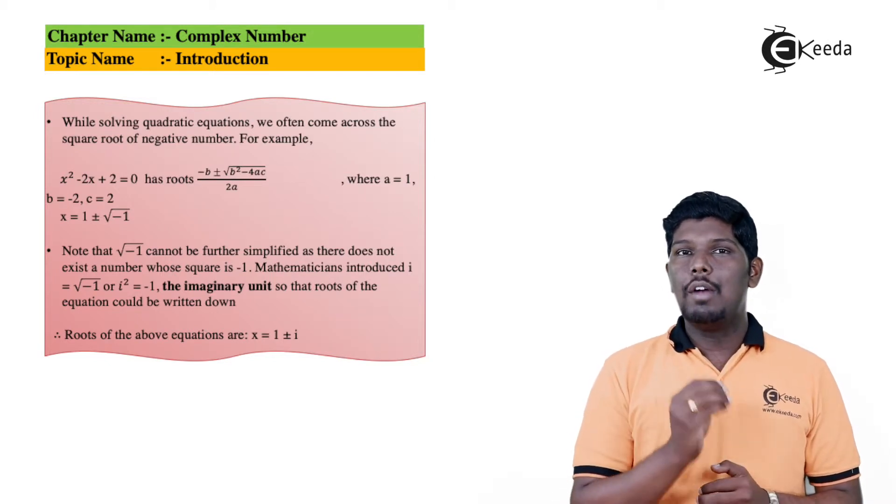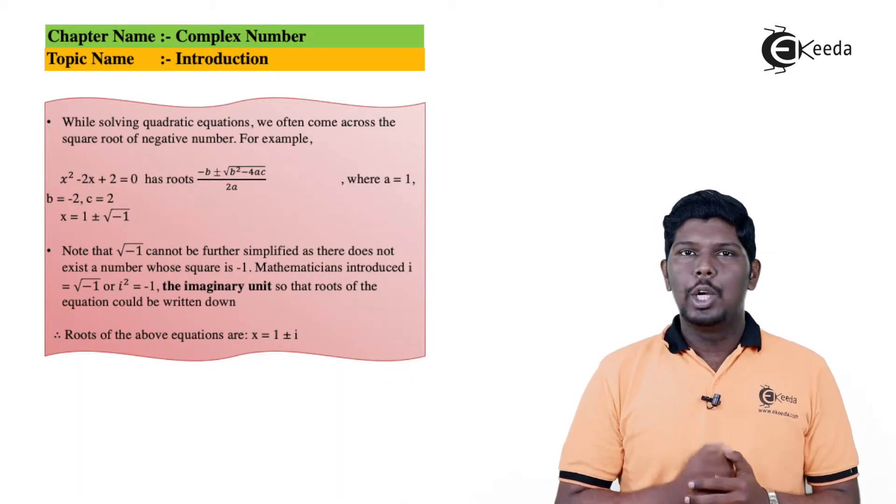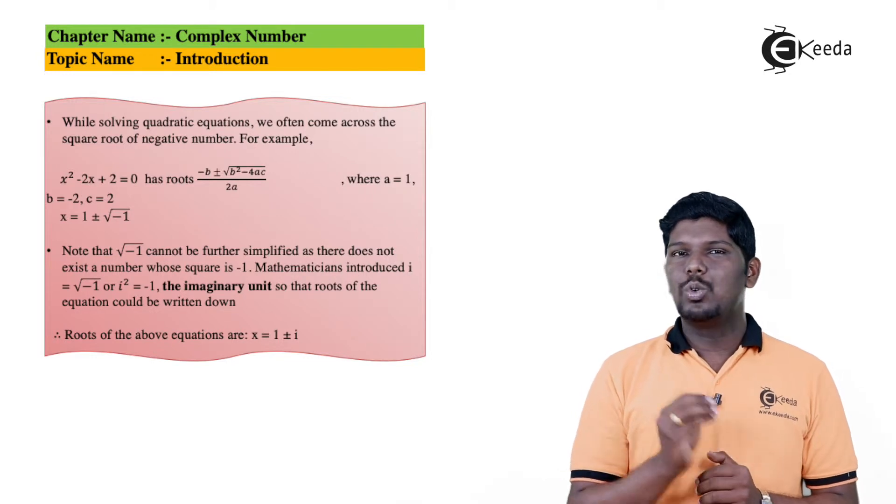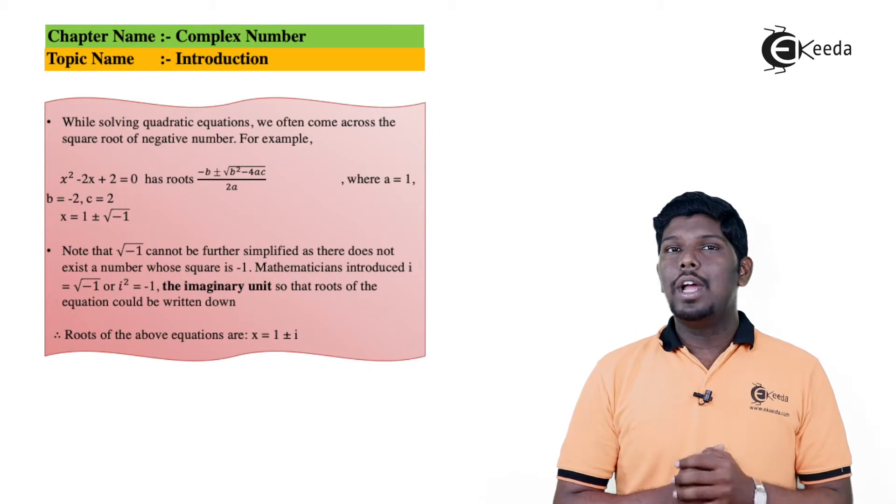Whenever we have √(-1), we say it is equal to i. Then what is i²? To get the value of i², we will simply square both sides, so the value of i² will be equal to -1. To further solve this equation, the final value of x will be equal to 1 ± i.